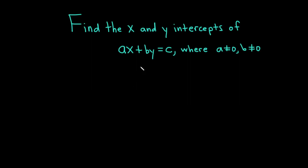Hello, in this video we're going to find the x and y intercepts of the graph of the equation ax plus by equals c, where a is not zero and b is not zero. Let's carefully work through this solution.